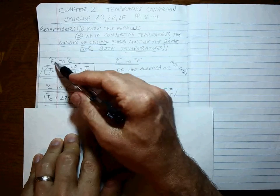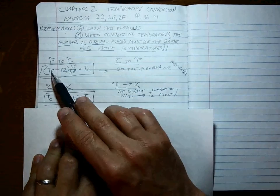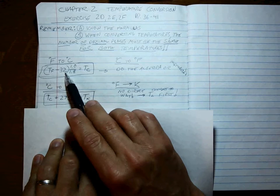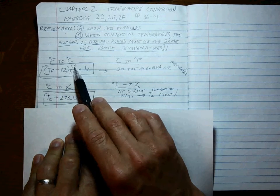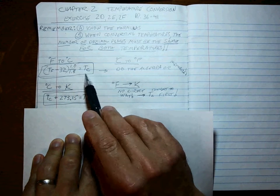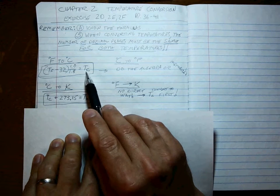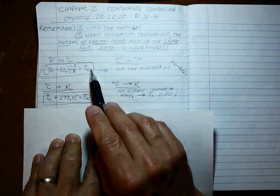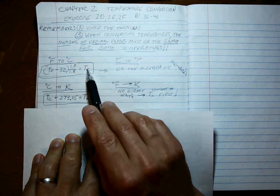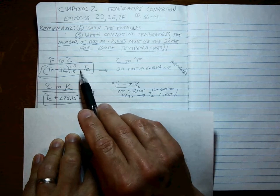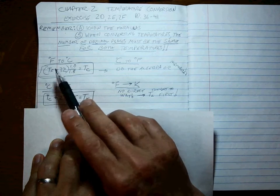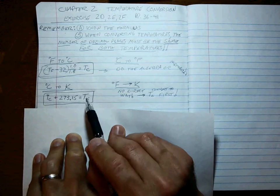The formula for Fahrenheit to Celsius looks like this. The temperature in Fahrenheit minus 32 times 1.0 divided by 1.8 is equal to the temperature in Celsius. You may have learned it in a different way, but this works for any kind of Fahrenheit to Celsius temperature conversion.